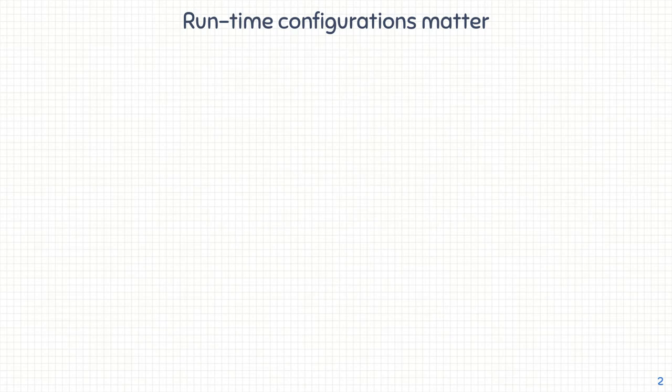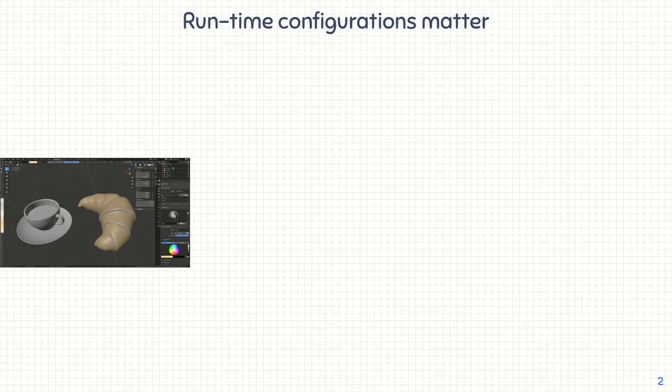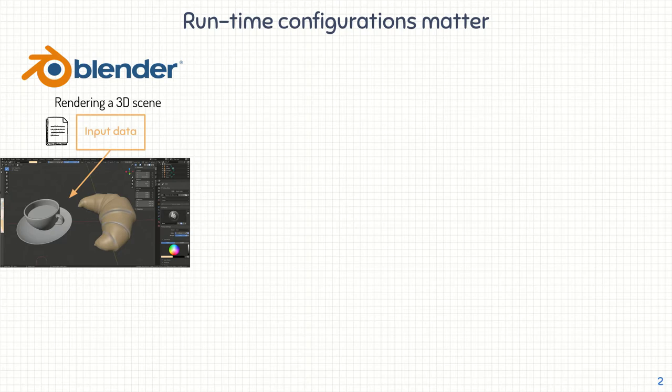Since it is breakfast time in France, I can't help but start this presentation with an example including a croissant and a cup of coffee. To introduce this example properly, we first have to present Blender, the 3D open source creation suite. We use Blender to render a scene composed of 3D objects — here a cup of coffee and a croissant. Blender takes a 3D scene, renders it from the point of view of a camera embedded in the scene, and depicts the resulting image. This is a very common process used to produce the animated movies we can see at the cinema.